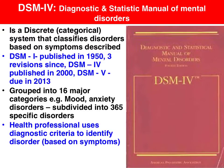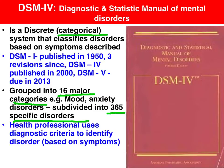The DSM, Diagnostic Statistical Manual, uses a categorical approach to classify mental disorders based on the conditions identified. There are 16 major categories in the DSM-IV, subdivided into 365 specific disorders.